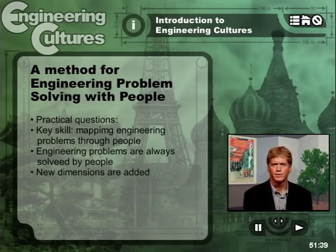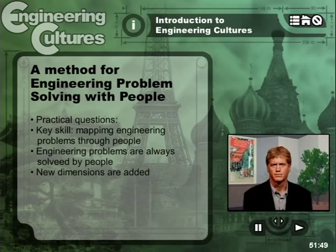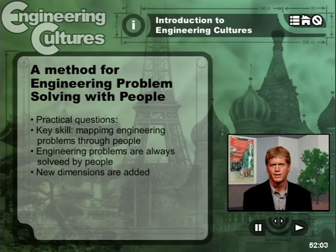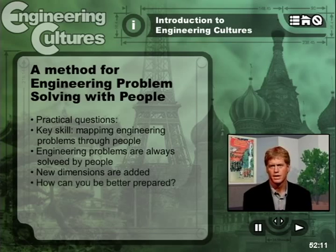Engineering problems are always solved by people. Once you put people in relationship to one another, new dimensions get added. Every time a problem is solved, someone gains a little power, someone loses a little power, someone gains some new contacts, somebody loses some contacts. Power relations shift and change constantly with each and every engineering decision. And on-the-job engineering decisions must be made in association with other groups, other perspectives, other people.